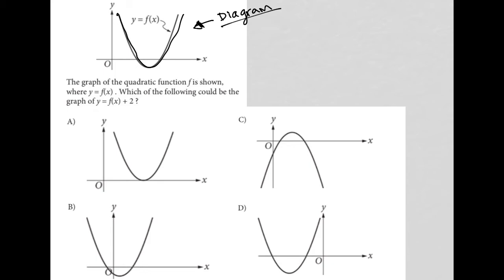We know that the vertex is here on the positive side. It has a positive x value and a negative y value. And we know that it faces up. The graph of the quadratic function f is shown where y equals f of x. Which of the following could be the graph of y equals f of x plus 2?